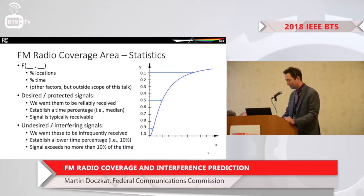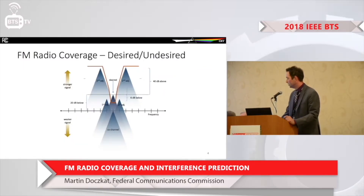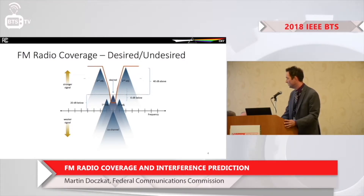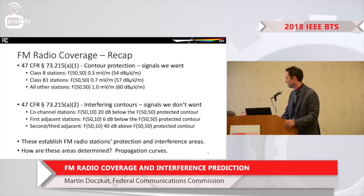Also on the slide, some D/U ratios are described. What that looks like is: a hypothetical receiver, shown in orange, would have the ability to receive the desired signal and reject any unwanted signals on the co-channel, first, or second adjacent channels. Just to recap those numbers — that's what we mean when we talk about all this.